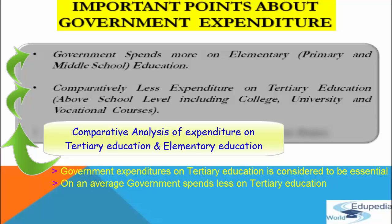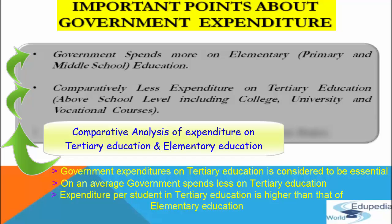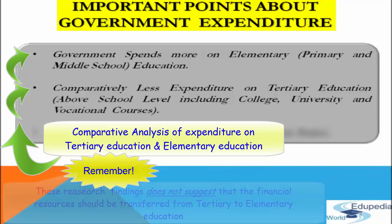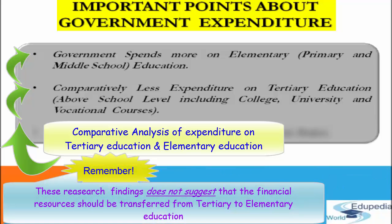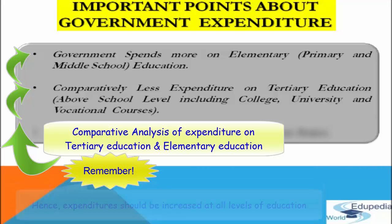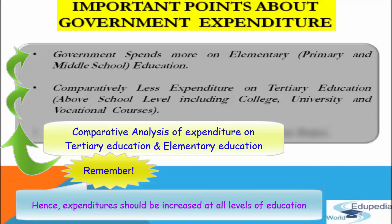On average, the government spends less on tertiary education; however, expenditure per student in tertiary education is higher than that of elementary education. But this does not mean financial resources should be transferred from tertiary to elementary education, because as we expand school education we need more trained teachers from higher education institutions. Therefore, expenditure on all levels of education should be increased.